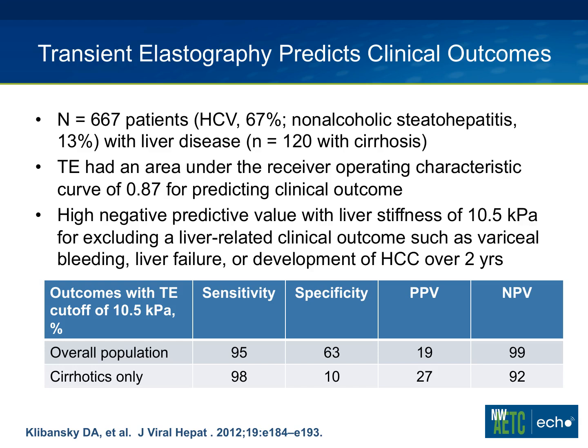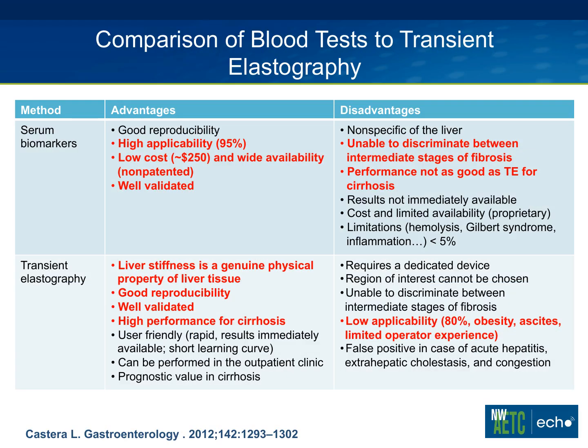Transient elastography has been shown to correlate with clinical outcomes. In a study of nearly 700 patients — many with Hep C, some with NASH — it was quite sensitive in predicting near-term clinical outcomes. Anyone with a reading over 10 to 10.5 kilopascals had a significantly elevated chance of liver failure, variceal bleeds, or hepatocellular carcinoma. This can help guide decisions about treating Hep C or intensifying surveillance for liver cancer.